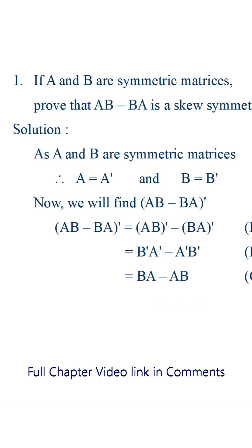We can rearrange the term to get minus of AB minus BA. Here the transpose has a negative sign. Hence, this is a skew symmetric matrix.